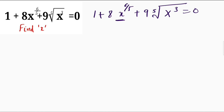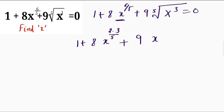We write this as 1 plus 8x raised to the power 2 into 3 divided by 5, plus 9, and this part we can write as 3x raised to the power 3 divided by 5, is equals to 0.